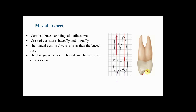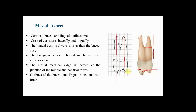From the mesial aspect, you can see the triangular ridges of both buccal and lingual cusps converging toward the central occlusal surface. Also visible are the cusp bridges: the mesial buccal cusp bridge, the mesial lingual cusp bridge, and the mesial marginal ridge. The mesial marginal ridge is convex and usually located at the junction between the middle and occlusal thirds of the crown.